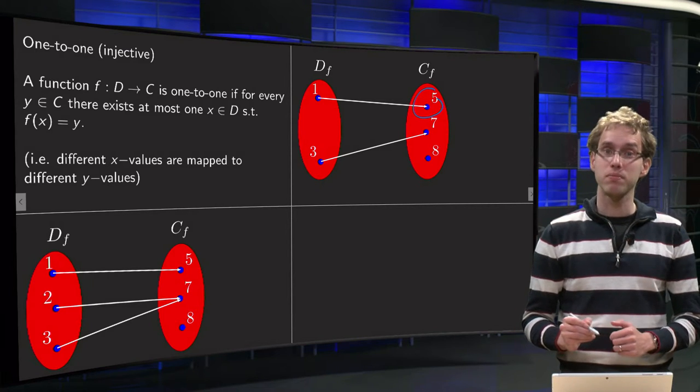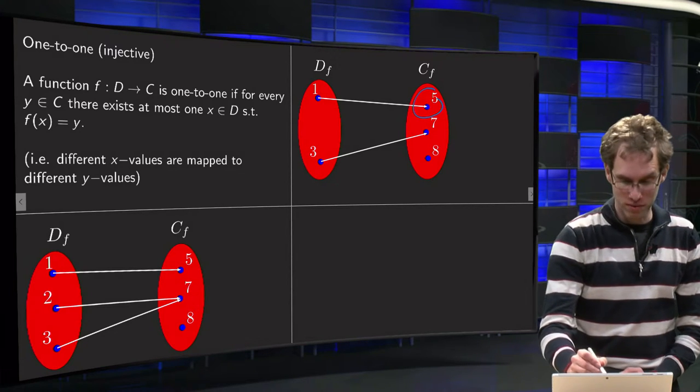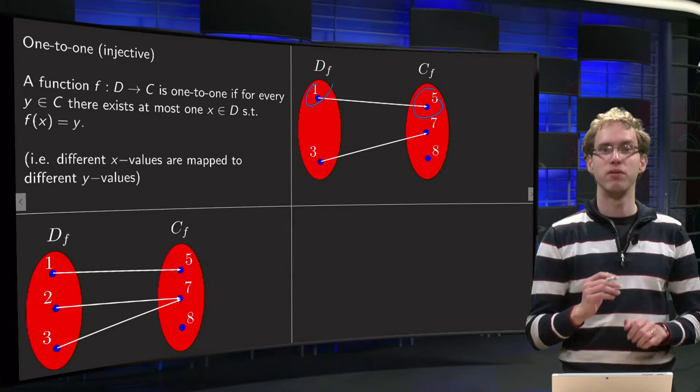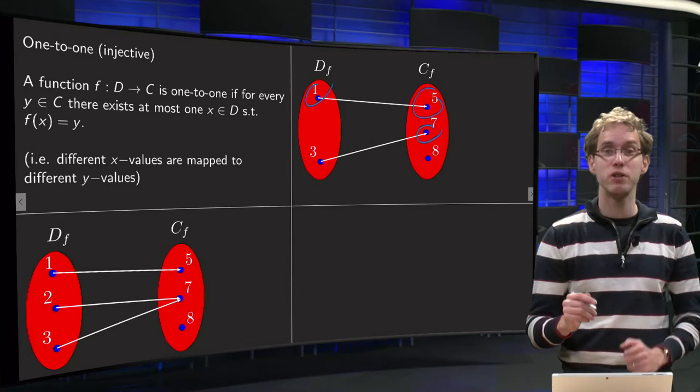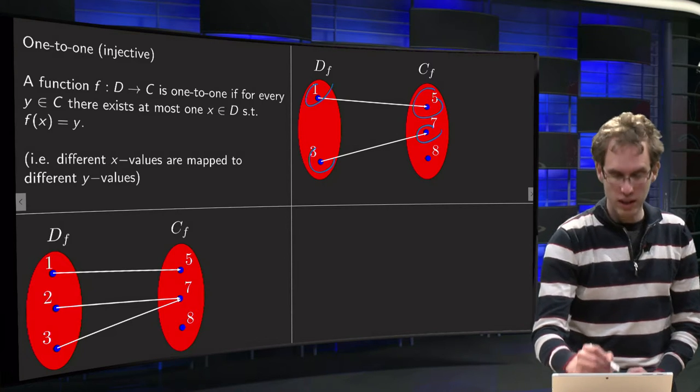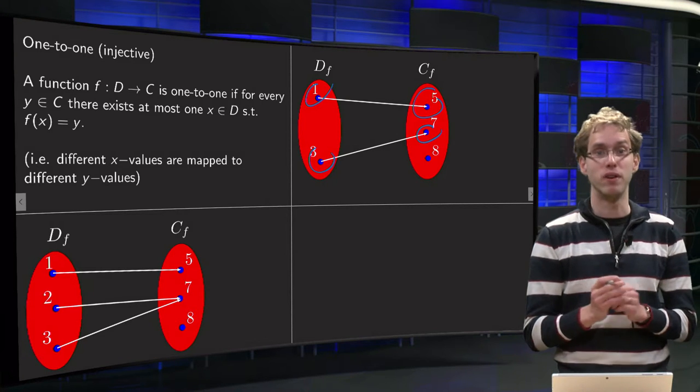So, value five, only one value is mapped to five, one, so that part is fine for one-to-one. Seven, now only one value is mapped to seven, three is mapped to seven, so at most one, so that's fine.